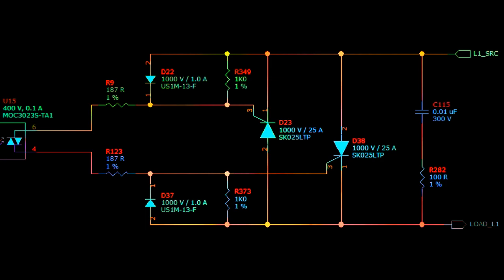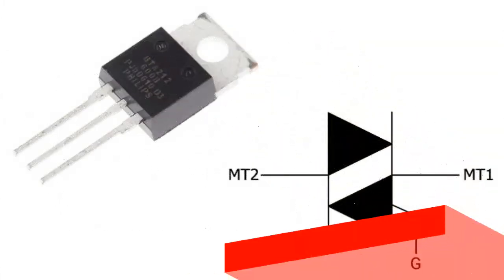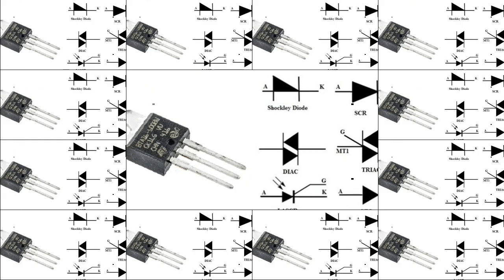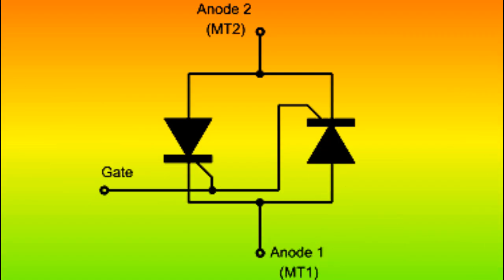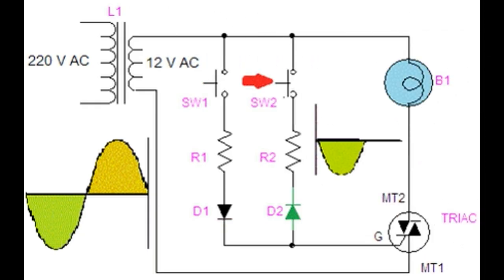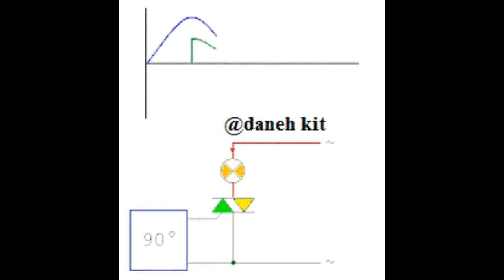Connecting two thyristors back to back increases the complexity and number of parts used in the switching circuit. There is another semiconductor component called the triode AC switch, or triac for short. Triacs are a family of thyristors that can be used as components in switching circuits. What is important about the triac is that these parts are bi-directional — a triac can be driven by applying positive and negative voltages to the anode and positive and negative pulses to the gate, making the triac a gate-controlled two-quadrant switching device.